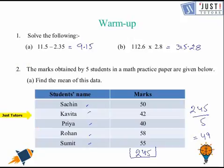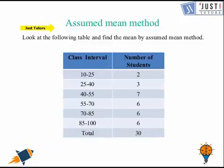Pat your back if you've got all the answers absolutely correct, well done. Now let's move on to the topic for today. So we'll be learning about the assumed mean method. Let's try to understand it with the help of an example. The question says look at the table and find the mean by assumed mean method. So assumed mean method is just an extension of direct method.